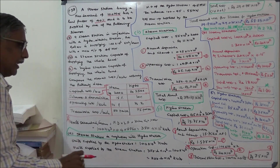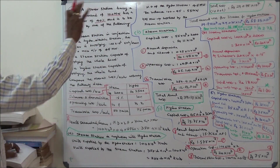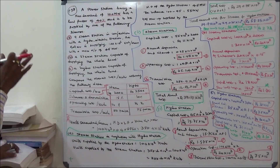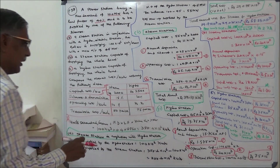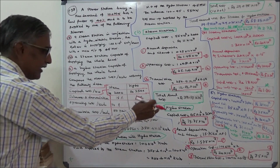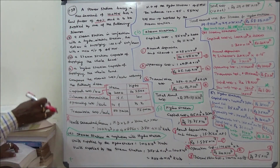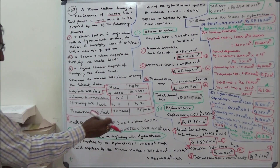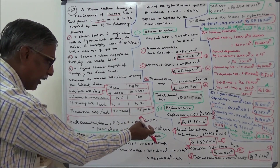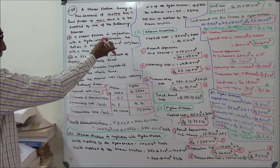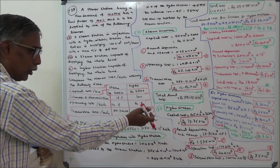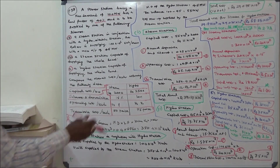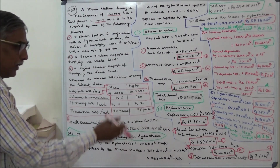Now calculating the hydro station. Capital cost: hydro station capacity is 45 megawatts, so 45 into 10 power 3 into 3500 equals rupees 15.75 crores. Annual interest and depreciation is 10%, so 0.10 into 15.75 crores equals rupees 1.575 crores. Operating cost is rupees 2 per kilowatt hour: 100 into 10 power 6 into 2 equals rupees 20 crores. Transmission cost is 75 paise: 100 into 10 power 6 into 0.75 equals rupees 7.5 crores.